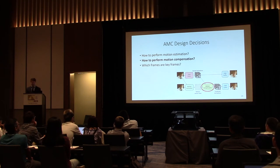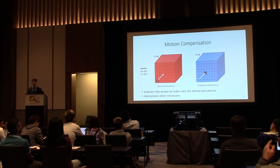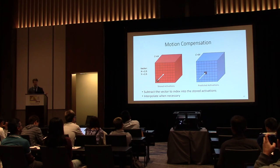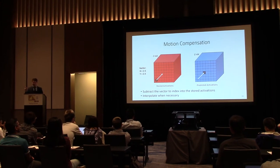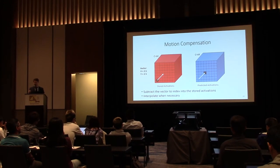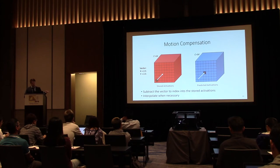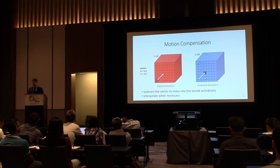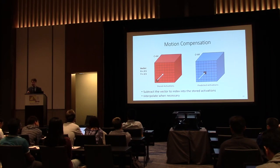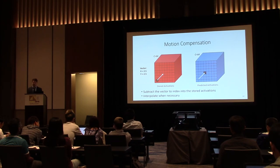Motion compensation is simpler. We find our motion vectors — in this case an x and y of 2.5 — take the index of the activation we're producing, subtract the vector from that index, and use the result to index into the stored activations. When vectors are fractional values like 2.5, which is very common, we handle this by interpolating to find the new value.